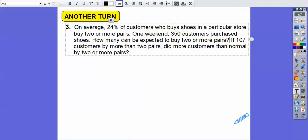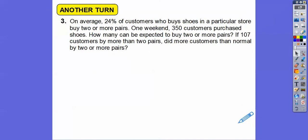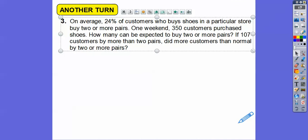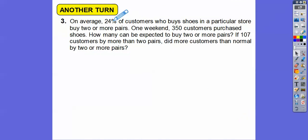So it's expected here that 24% of the people buy two or more pairs. So we're first going to find 24% of 350. Then we can answer both of these. How many are expected? And if they bought 107 people bought two or more pairs out of that 350, is that more than expected? So let's find 24% of 350. So 0.24 times 350, I get 84 customers.